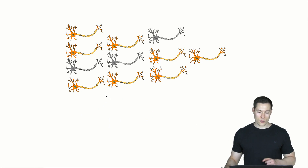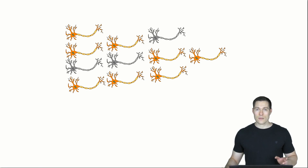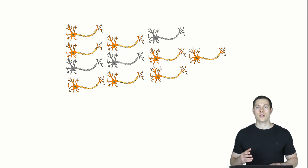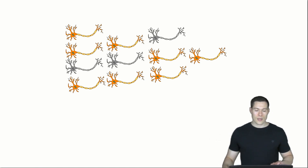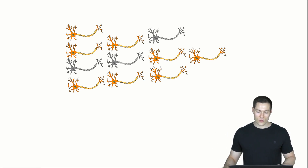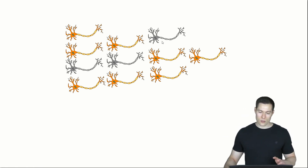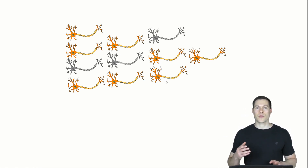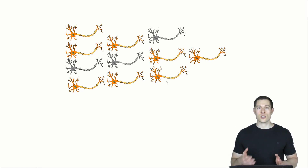We have billions of such neurons in our brain and they are organized in networks — hence the term neural network. A neuron receives electrical signals from other neurons connected to its dendrites, and those signals are added up in the soma. If that sum exceeds a certain threshold level, then this neuron is triggered to create an electrical signal itself, which is sent through the axon and axon terminals to all the other neurons it is connected to. Those neurons then process the signal in the same way.